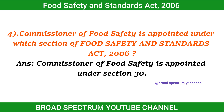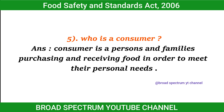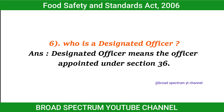Question 4: Commissioner of Food Safety is appointed under which section of the Food Safety and Standards Act, 2006? The Commissioner of Food Safety is appointed under Section 30. Question 5: Who is a consumer? A consumer is a person purchasing and receiving food in order to meet their personal needs. Question 6: Who is a designated officer? A designated officer means the officer appointed under Section 36.